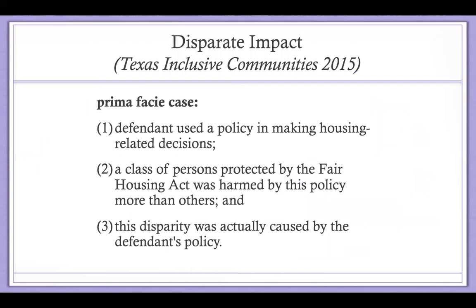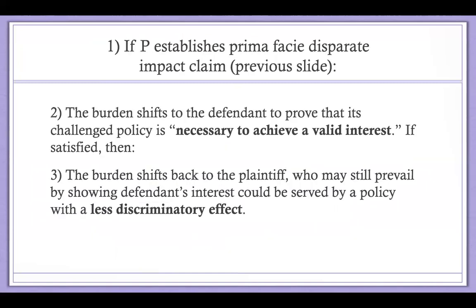In 2015, the U.S. Supreme Court affirmed that disparate impact is a viable means of proving a Fair Housing Act claim. The prima facie case requires showing: the defendant used a neutral policy in making housing-related decisions; a class of persons protected by the Fair Housing Act was harmed more than others; and the disparity was actually caused by the defendant's policy. Once established, the burden shifts to defendant to show the challenged policy is necessary to achieve a valid interest. If that is met, the plaintiff can still prevail by showing the interest can be served by a policy with a less discriminatory effect.